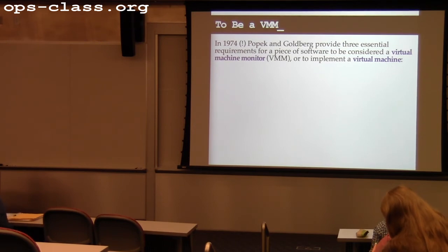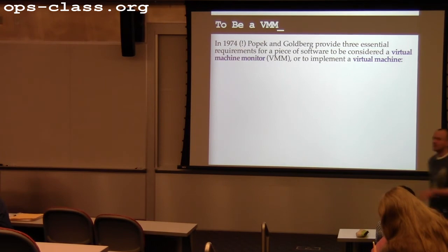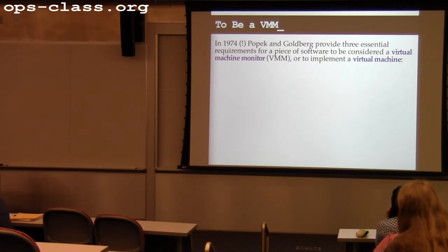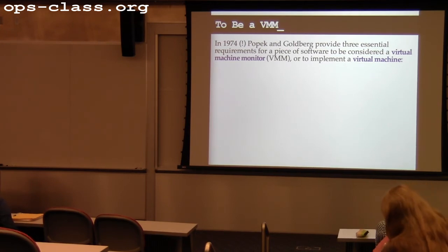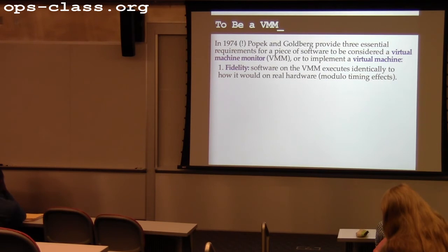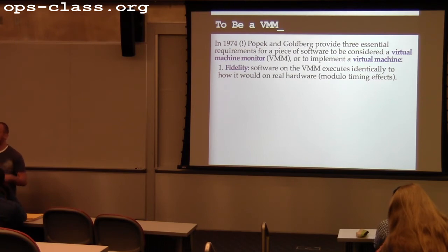Virtualization is not a new idea. In 1974, there was a paper that identified the three requirements for a virtual machine monitor. First, software running inside the virtual machine should execute identically to how it would on real hardware — modulo timing, since the virtual machine may be slower. But the guest OS should not be able to detect it is running on virtualized rather than physical hardware.